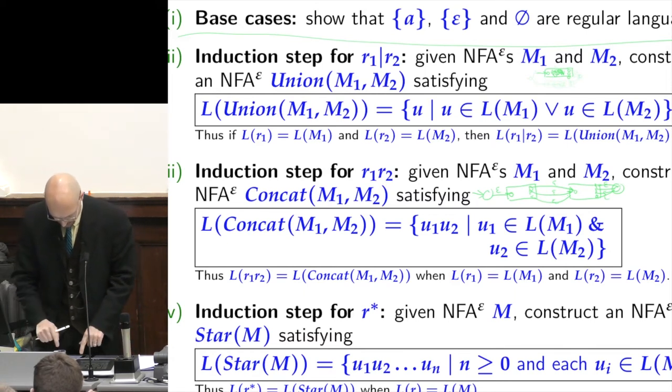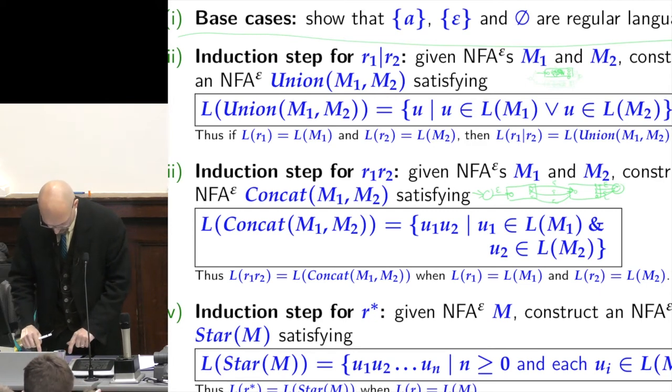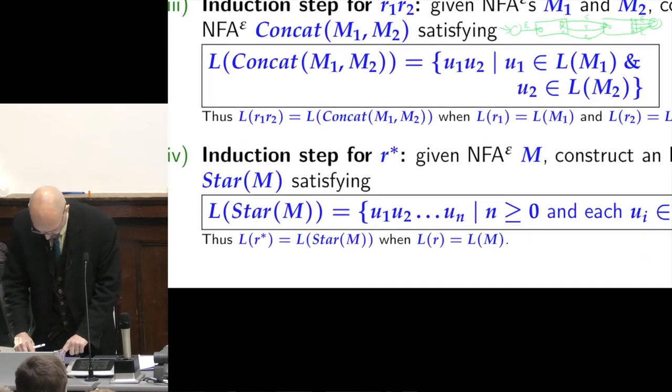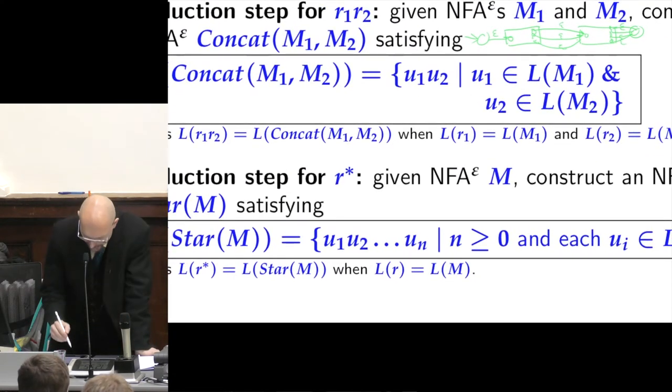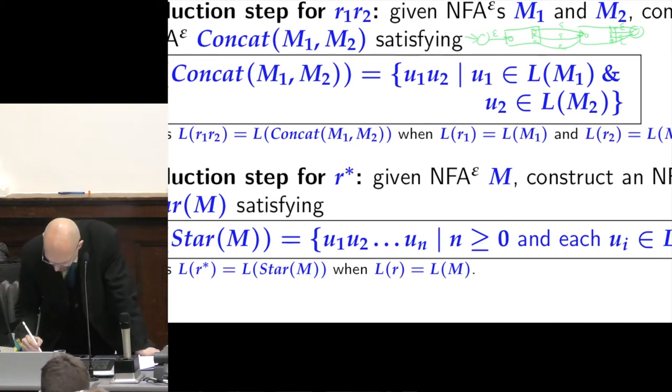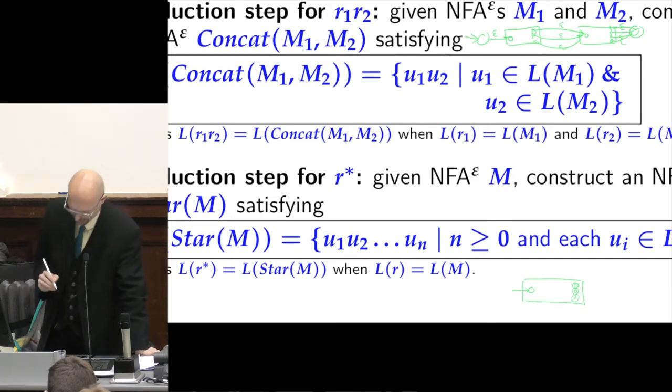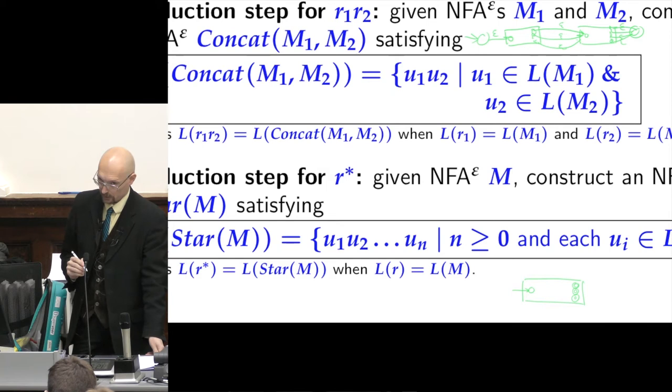And finally, before parting for today, the star, which is maybe the coolest thing. The star means repeat zero or more times. So if I have a machine that represents the regular expression R with its starting state and all its accepting states over here. What would I do?